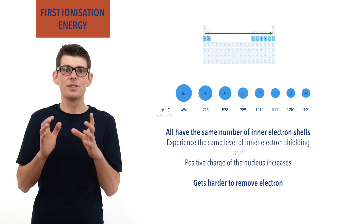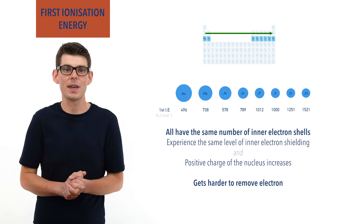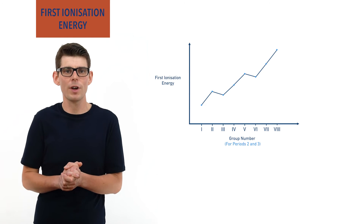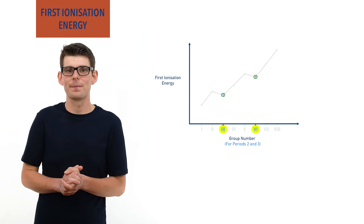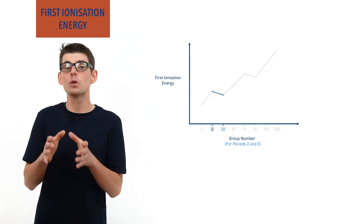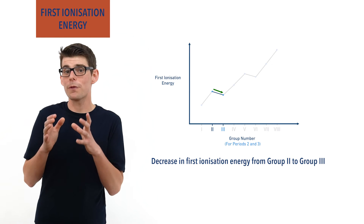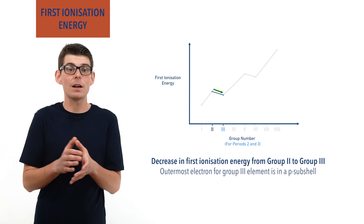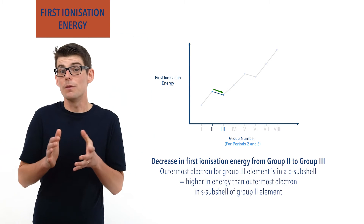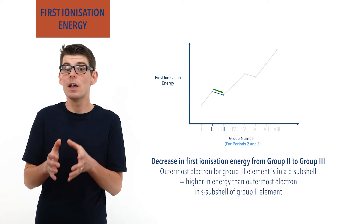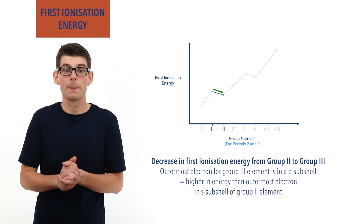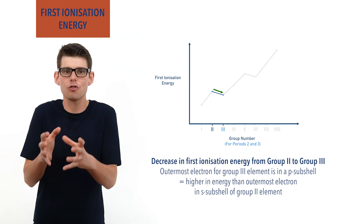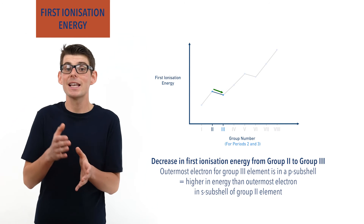First ionization energy increases as a trend across a period. If we look at the first ionization energies of elements in a period on a graph, we always see two exceptions to this general trend: elements in group 3 and group 6. Moving from group 2 to group 3 leads to a decrease in first ionization energy. This is because for group 3 elements the extra added electron goes into a new p subshell that is higher in energy than the s subshell the outer electron in the group 2 element is in. This means the outermost electron for the group 3 element is at a higher energy and is easier to remove, giving a lower first ionization energy. The added proton and positive charge in the nucleus doesn't quite give enough extra attraction to override the increased distance and energy gap between the s and p subshells.